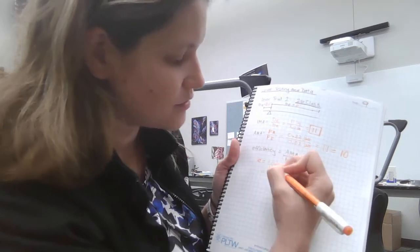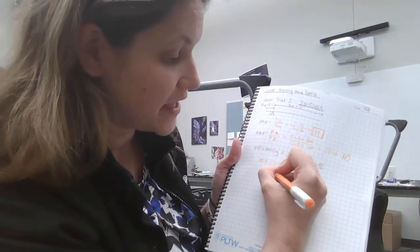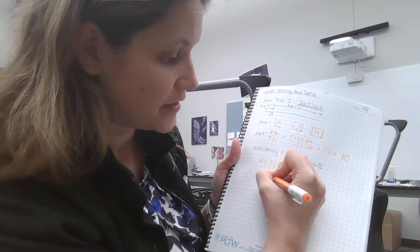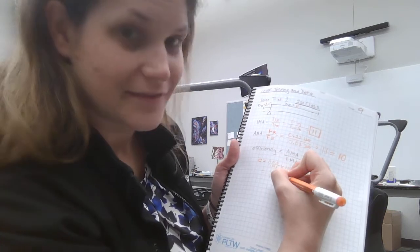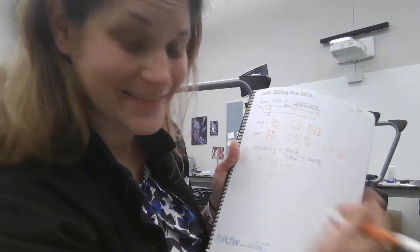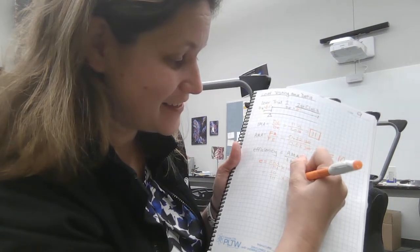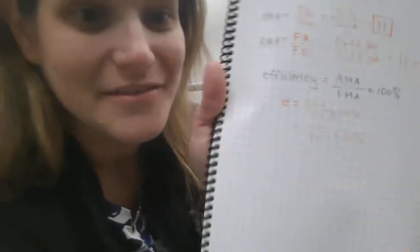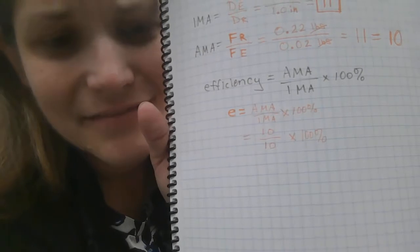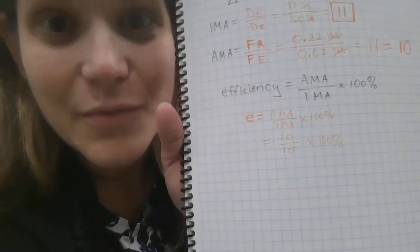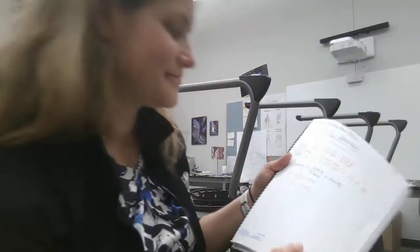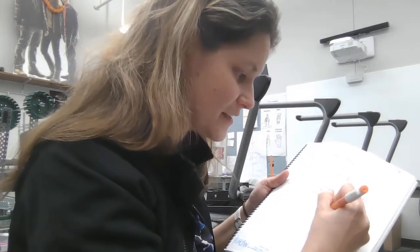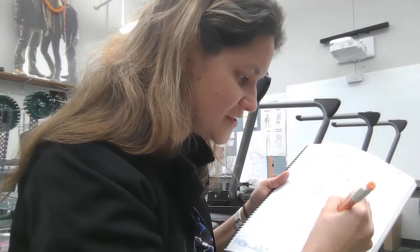That's equal to 10 divided by 10 times 100%. Okay. So what's 10 divided by 10? Oh, it's one. What's one times a hundred? Oh, it's a hundred. Boop. 100% efficient.